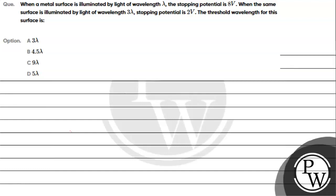Let's read the given question. When a metal surface is illuminated by light of wavelength lambda, the stopping potential is 8 volt. When the same surface is illuminated by light of wavelength 3 lambda, the stopping potential is 2 volt. The threshold wavelength for this surface is: option A) 3 lambda, option B) 4.5 lambda, option C) 9 lambda, option D) 5 lambda.